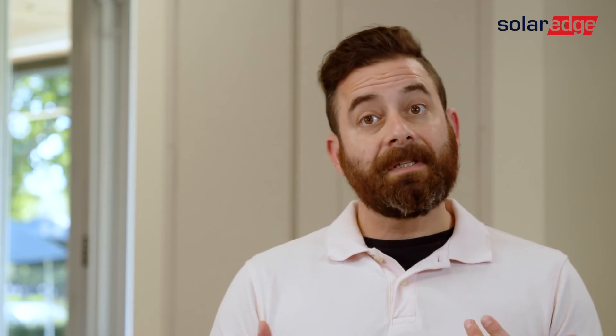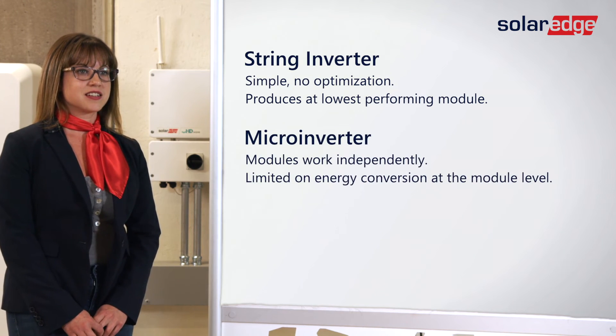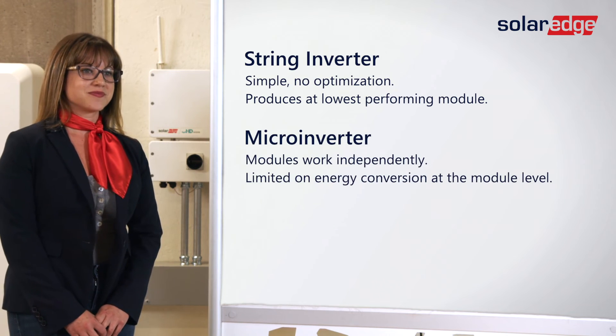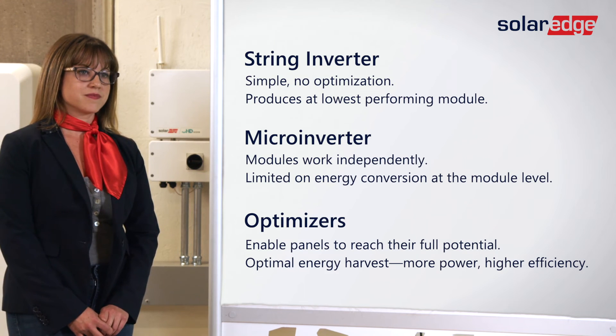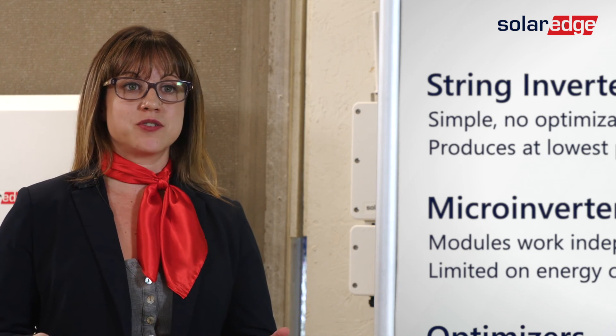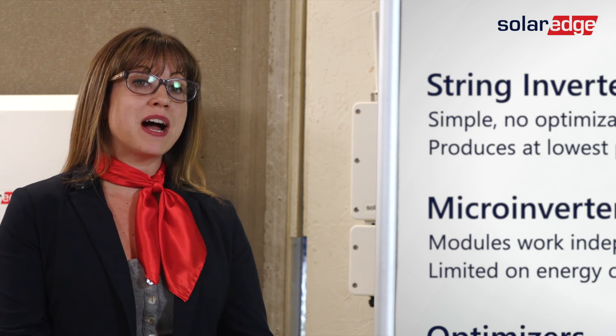So, string inverters: simple, no optimization, but inexpensive if you don't have any shading or need for module-level monitoring. Then you have microinverters, where modules can work independently but are limited to the amount of energy their microinverter counterparts can produce. And then you've got the SolarEdge optimized solution, where power optimizers help panels reach their full potential while harvesting everything at one source on the wall for optimal efficiencies — and it's the best for shading. Josh, that's a great explanation. SolarEdge provides the best solution whether there's shading or not, meaning more power for homeowners and more money in their pocket. SolarEdge really is not a string inverter — in fact, it's truly something else.